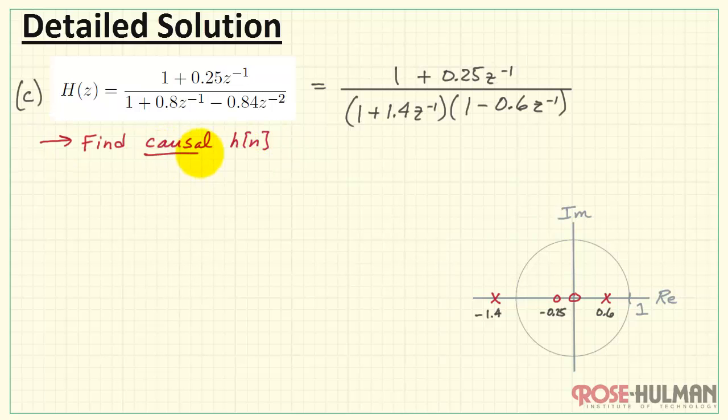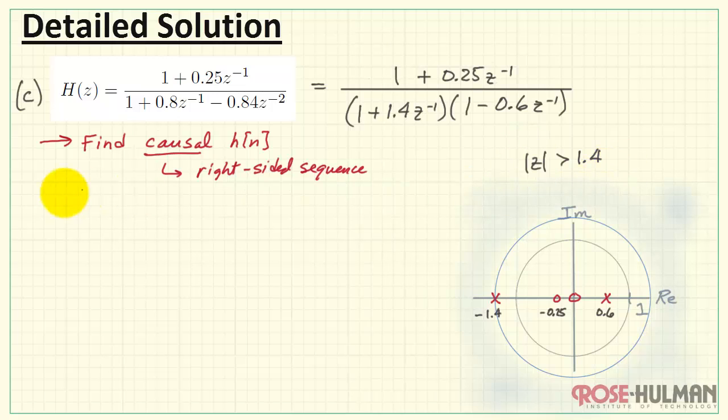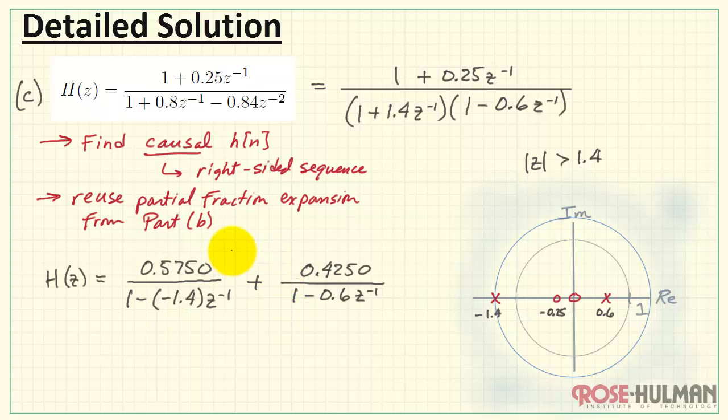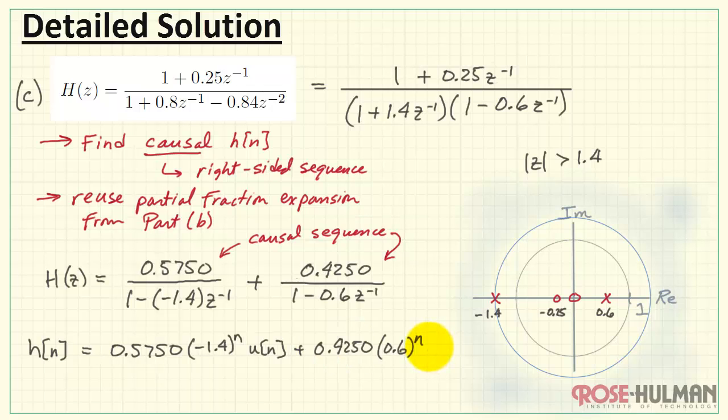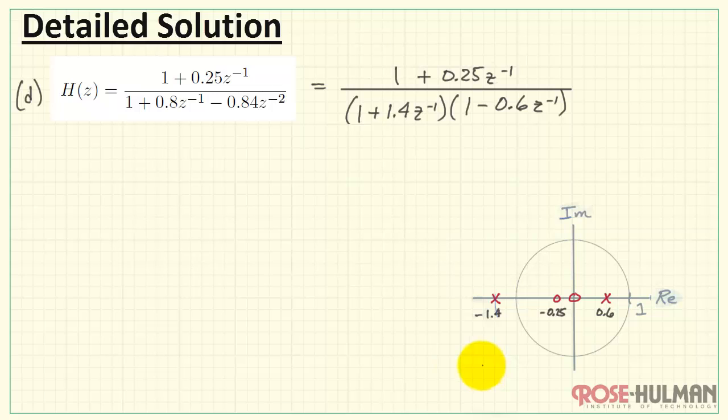Now, in part c, we want to find the causal impulse response, H of n. Causal means we are looking for a completely right-sided sequence. That means as we look at the pole-zero diagram, we need to define the region of convergence as being outside the outermost pole. That means we need magnitude of z greater than 1.4 in this case. We can reuse the partial fraction expansion results from part b. The difference now is we need to choose the inverse z-transform entries in our table to correspond to a causal sequence for each. And that's what I'm doing here. This would be our result, then, for part c. We observe that this term involving minus 1.4 raised to the n's power is unstable because 1.4 raised to the n, as n increases, just keeps getting larger and larger.